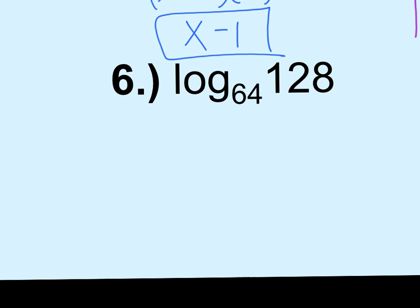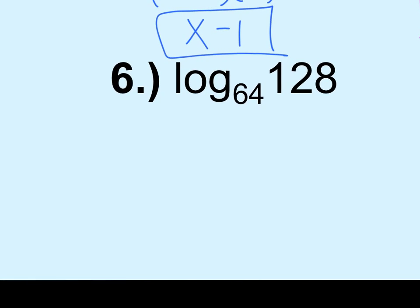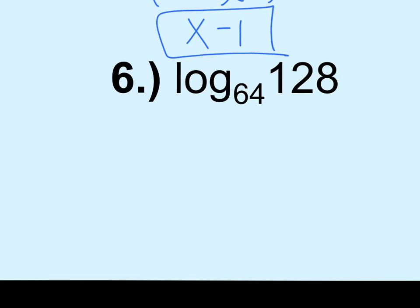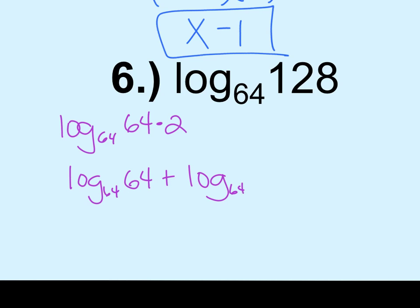Okay, number 6, and I think this one's a little bit trickier. Okay, but give me one way I could break that down. What is 128? Is there something I can multiply 64 by to get to 128? 2. So I can say that this is log base 64 of 64 times 2. Can I expand that? What happens when I expand and it's multiplication? So this would be log base 64 of 64 plus log base 64 of 2. What is log base 64 of 64? 1.